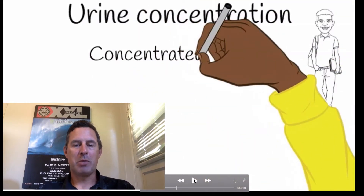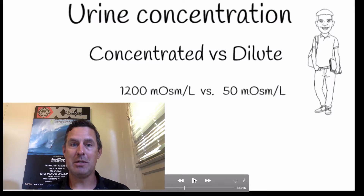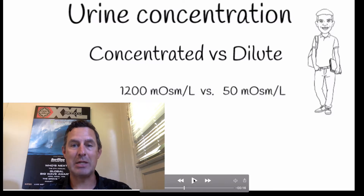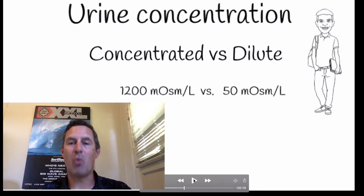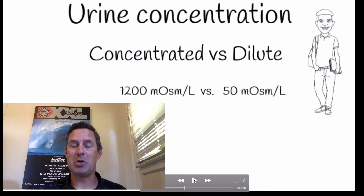The countercurrent multiplier system is related to the concentration of urine that we produce. We can produce concentrated urine or dilute urine, and anything within that spectrum. Concentrated urine has solutes and a lower volume of water, with an osmolarity anywhere from 1200 to 1400 milliosmoles per liter. Dilute urine, which is clear, has a low solute content and a greater volume of water — as low as 50 milliosmoles per liter.